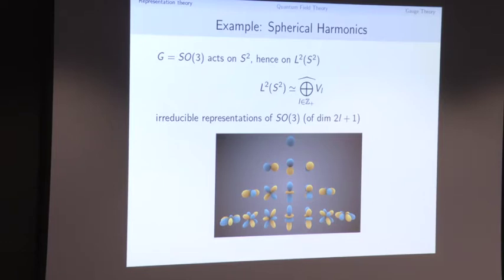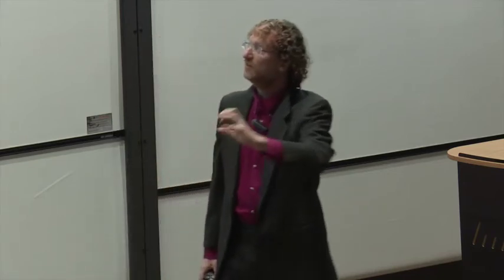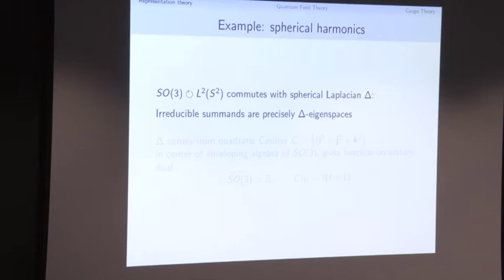How do we think of this example in a way that generalizes? When the group of rotations acts on the sphere by isometries, it commutes with the Laplace operator on the sphere. So we can study the Laplace on the sphere, decompose functions into eigenspaces of the Laplace operator, and wonderfully, this exactly gives us the decomposition into irreducible representations. The decomposition into irreducible representations works out to be exactly the decomposition into eigenspaces of the Laplace operator.